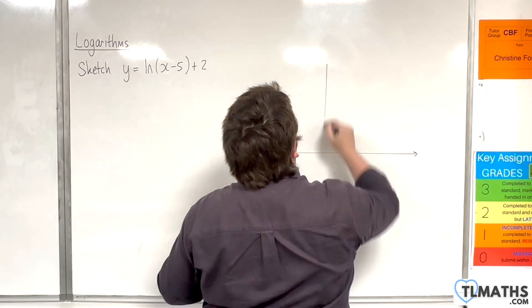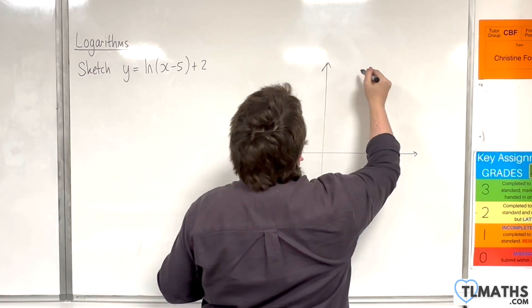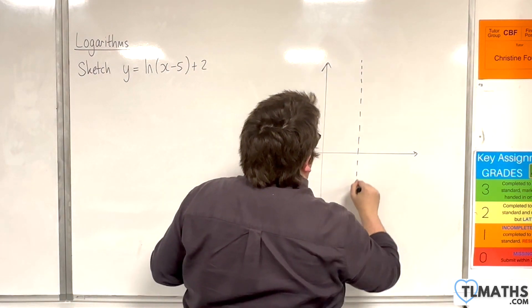So first of all, vertical asymptote is when x is going to be equal to 5, because that will make the bracket 0.